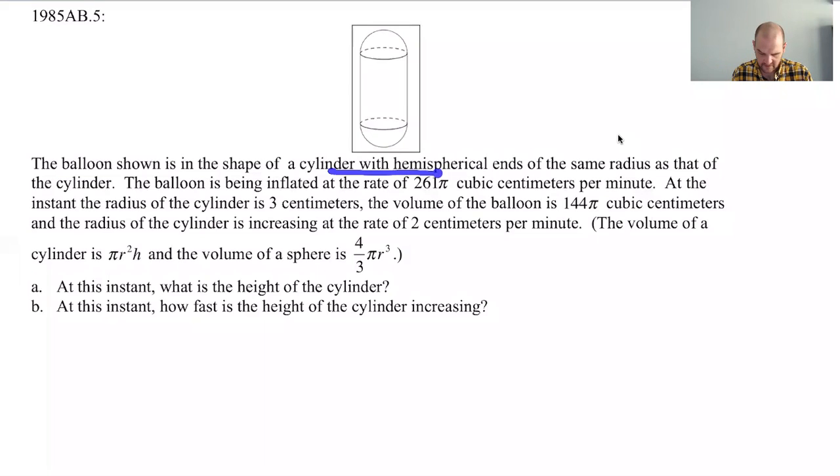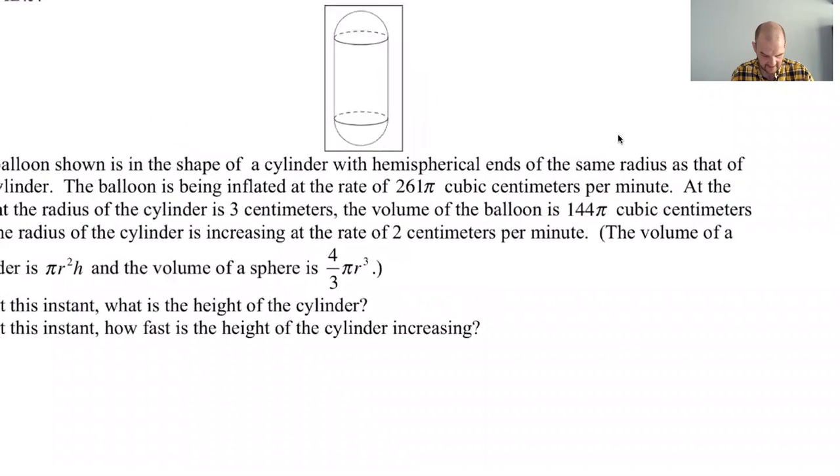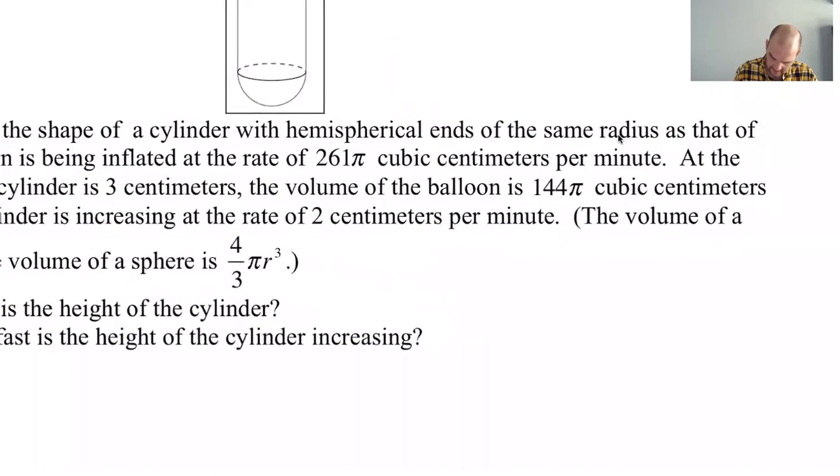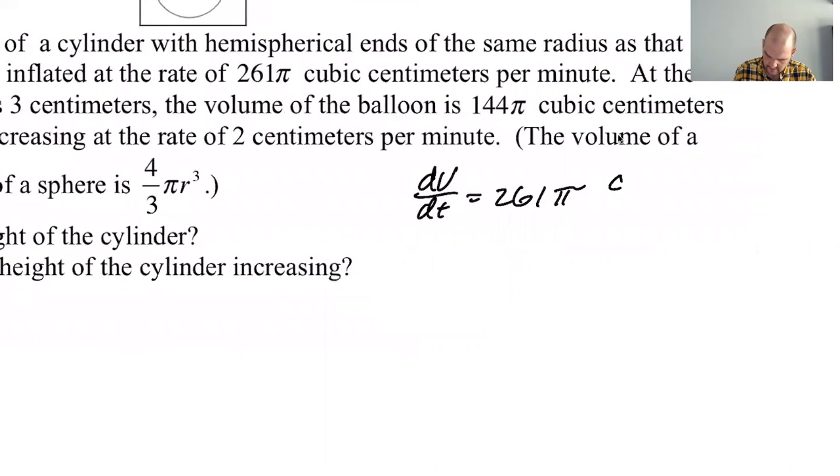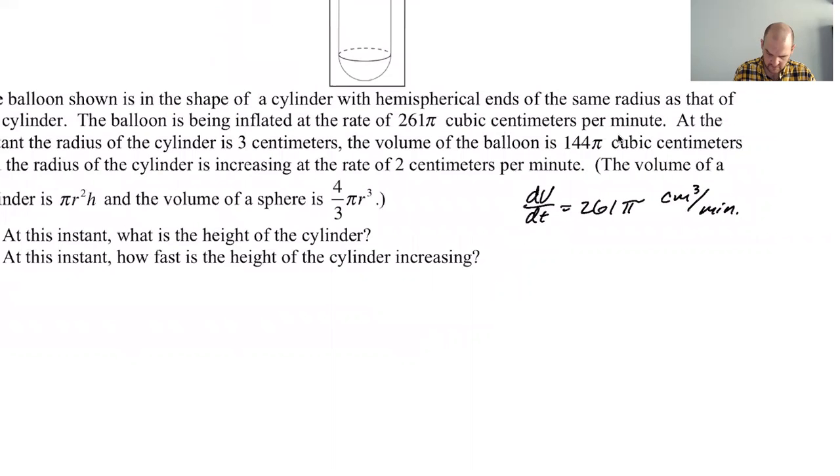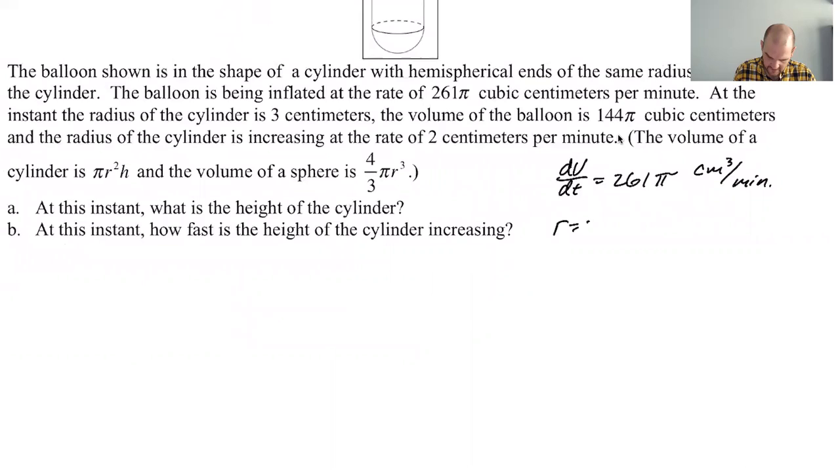The balloon is in the shape of a cylinder with hemispherical ends of the same radius as that of the cylinder. So it's like a hemisphere, a cylinder, and then another hemisphere. And then at the instant, the radius of the cylinder is three, the volume of the balloon is 144 pi. And the radius of the cylinder is increasing at a rate of two centimeters per minute.